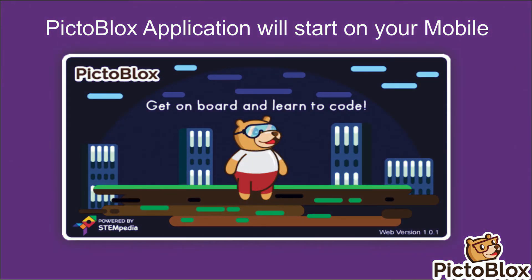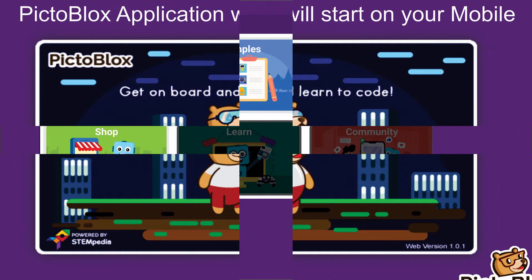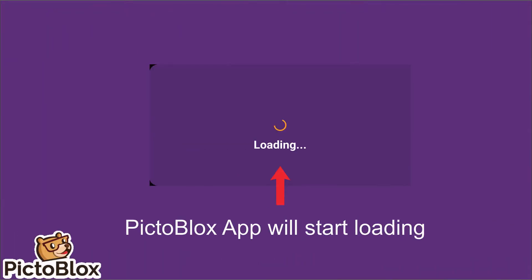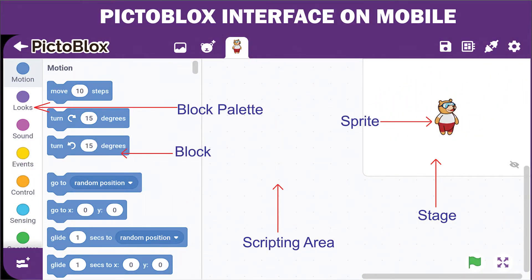Once the PictorBlock application starts on your mobile, you will get an arrow on the right-hand side. Click on Next. The moment you click on Next, PictorBlock application will start loading. Once it is loaded, you will get the PictorBlock interface with a sprite, a stage, a scripting area, a block palette, and blocks — this is the entire interface of PictorBlock.